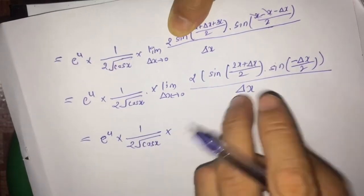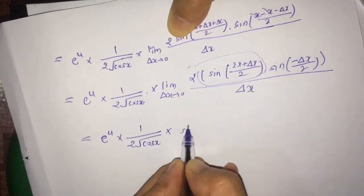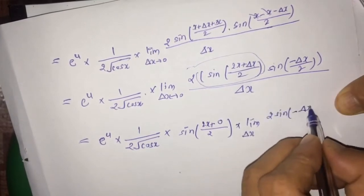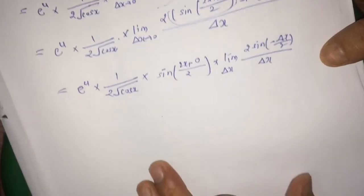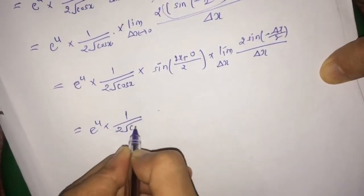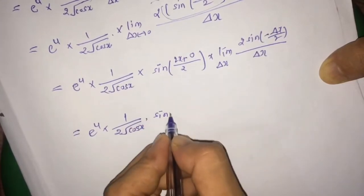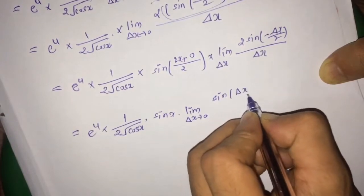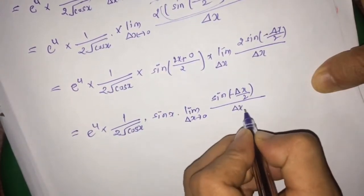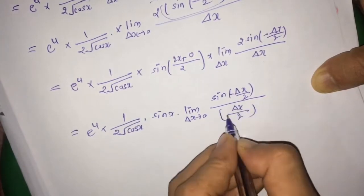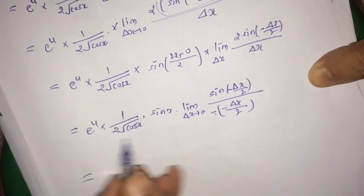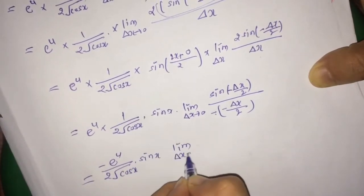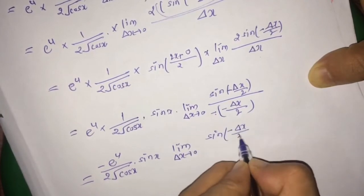We are left with exponential(u) times 1/(2√(cos x)) times limit δx tends to 0 of 2 times sin((2x + δx)/2) times sin(−δx/2), divided by δx. Taking sin((2x + δx)/2) outside the limit by substituting δx = 0, we get sin(2x/2) = sin(x), times limit δx tends to 0 of 2 times sin(−δx/2), divided by δx.